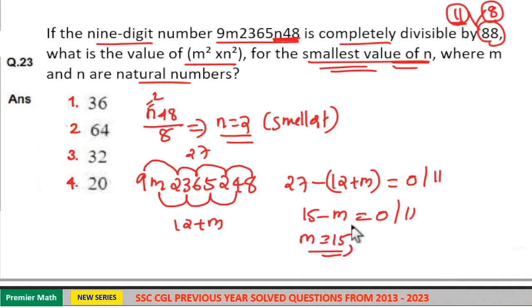15 minus m equals 0 means m equals 15. 15 minus m equals 11 means m equals 4.